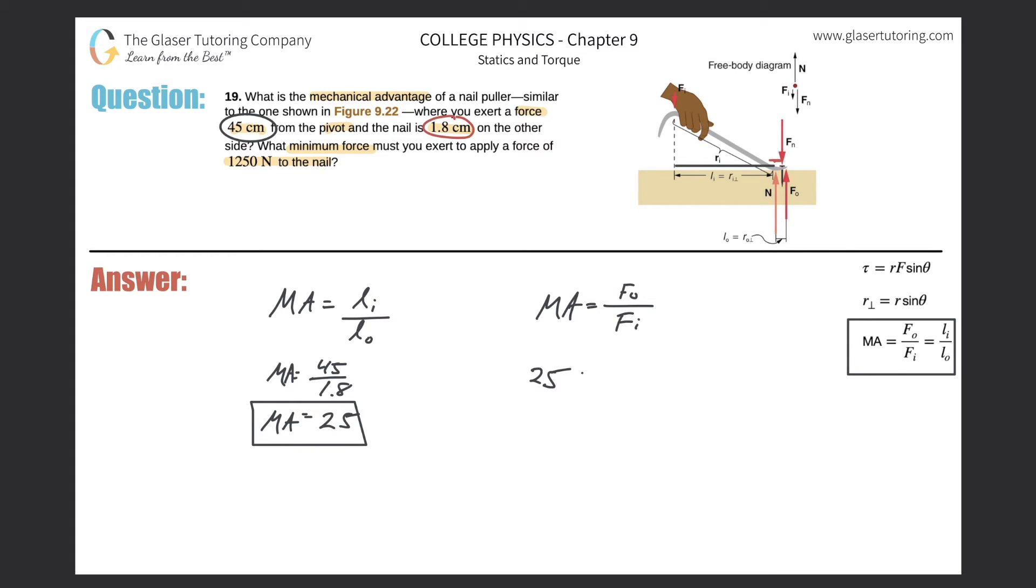The mechanical advantage we found was 25, and what is the 1250 newton force? It's the output force, right? The question asks what minimum force must you exert—so that's asking for the input force, which is the unknown. The output force is the force applied to the nail, which is 1250 newtons.